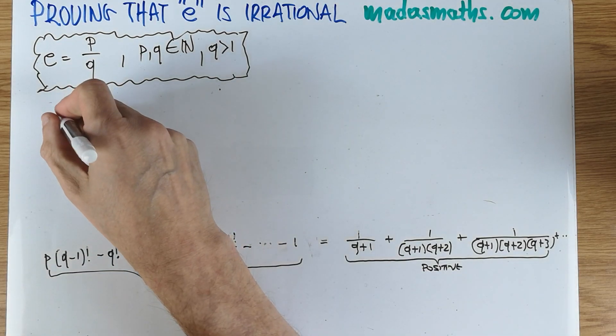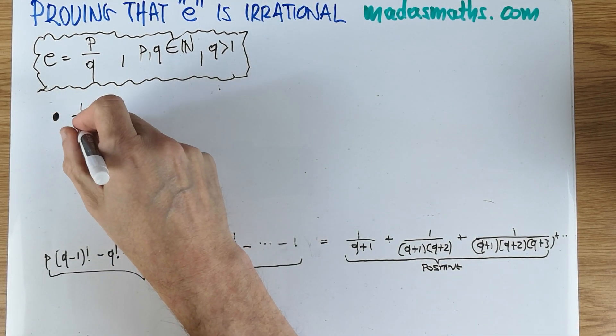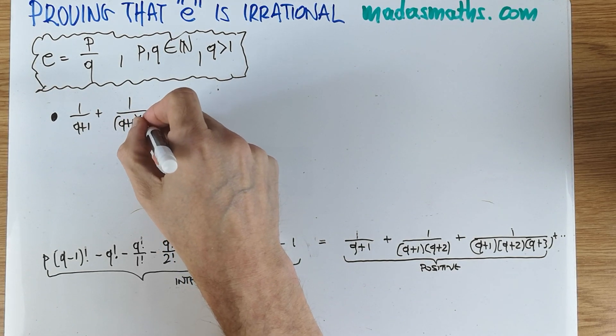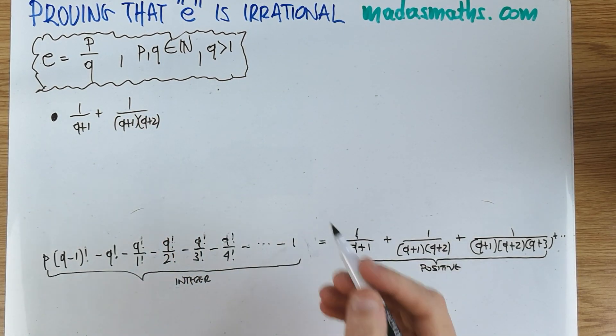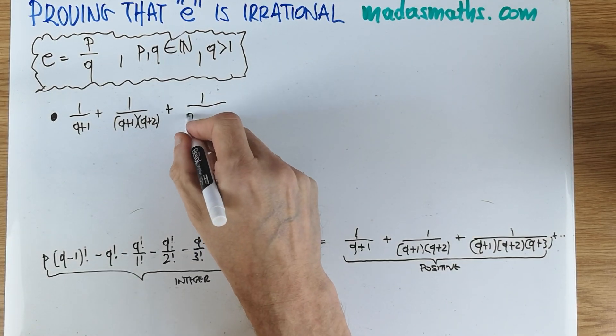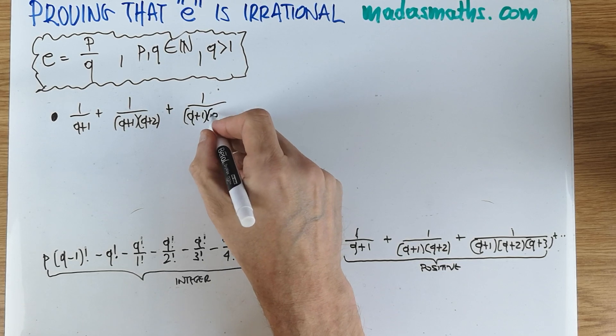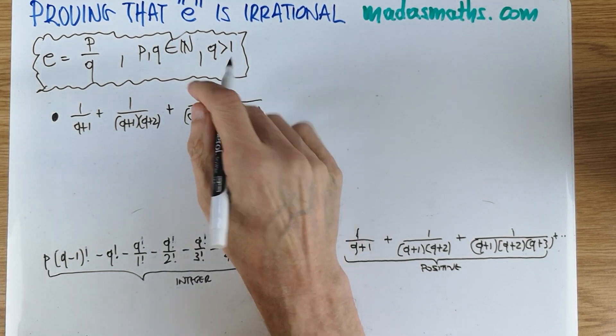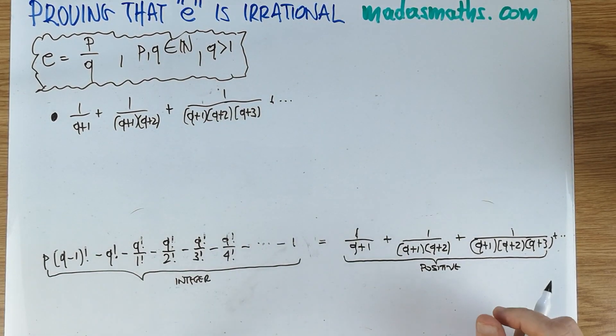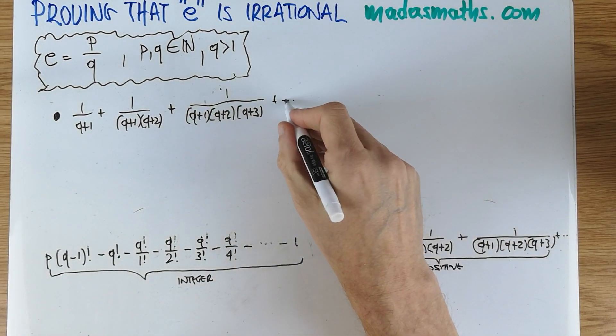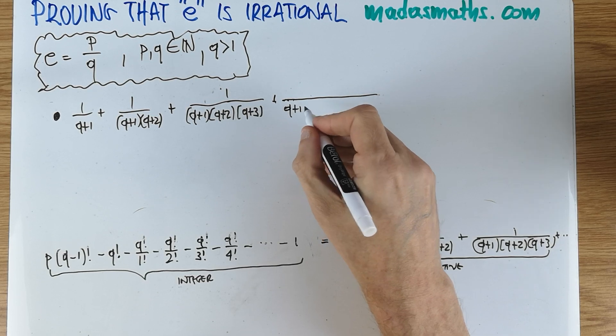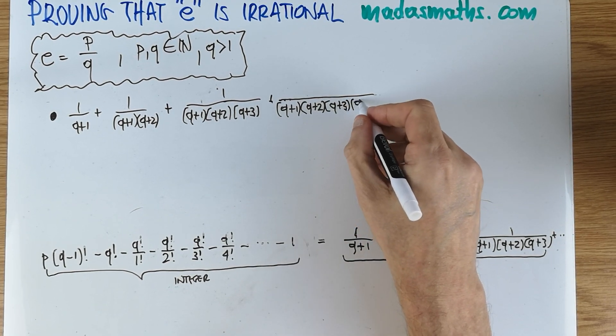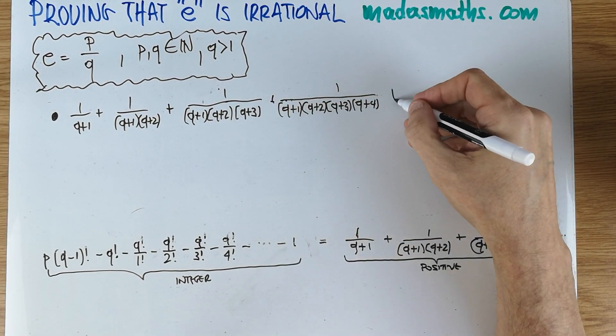So I'm going to look at the 1 over q plus 1, plus 1 over q plus 1, q plus 2, and so on. The right hand side, basically, of that and say, okay, what kind of can I draw any more conclusions? Because remember, we do a proof by contradiction. So something is wrong with what we have just written so far. And we cannot see anything wrong so far.